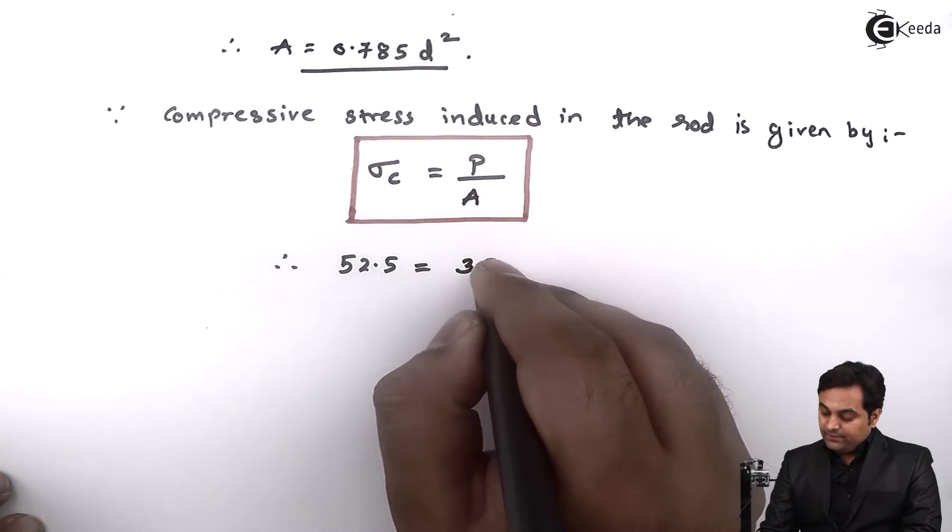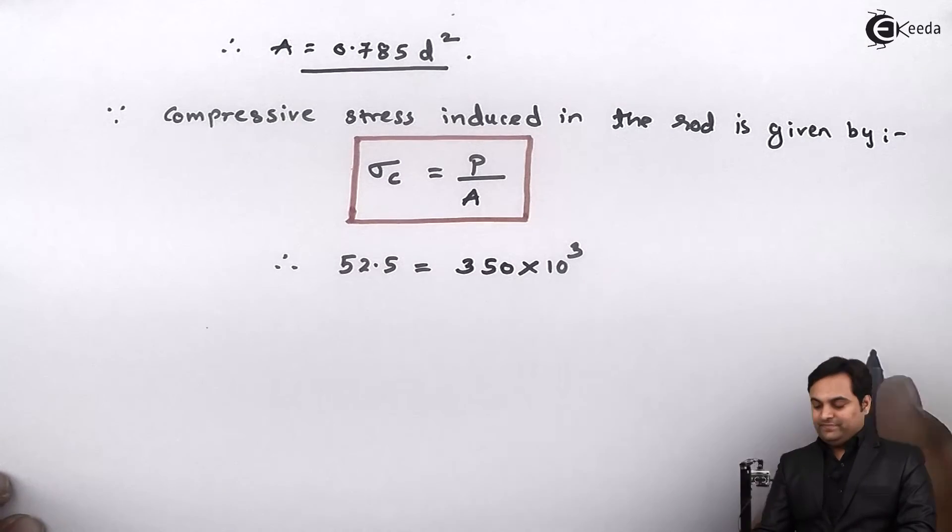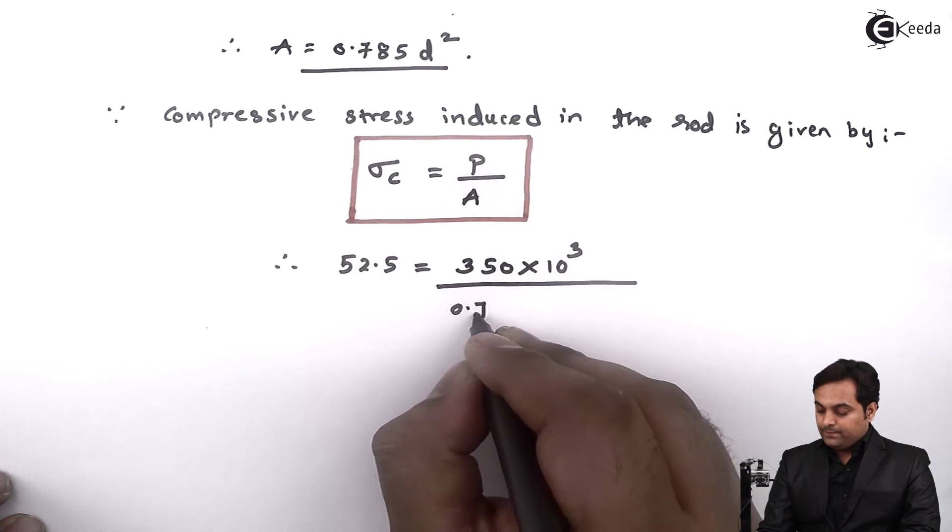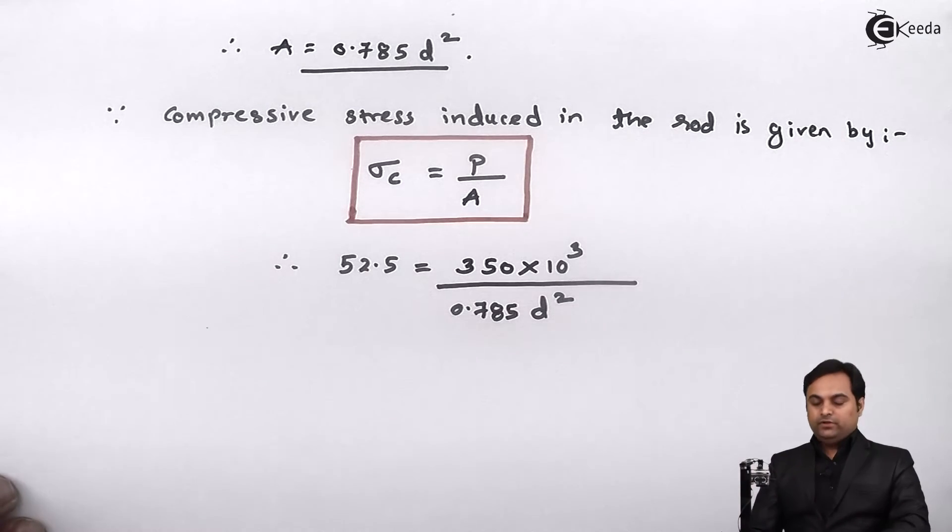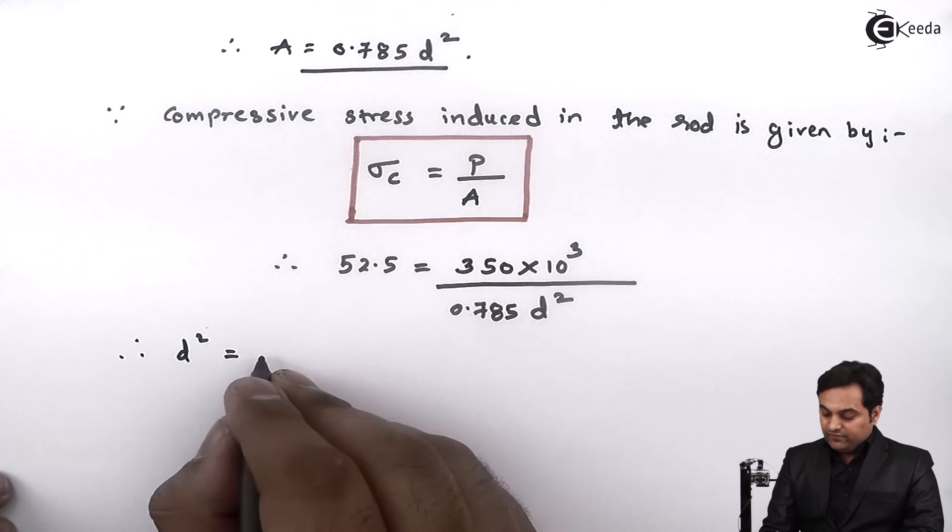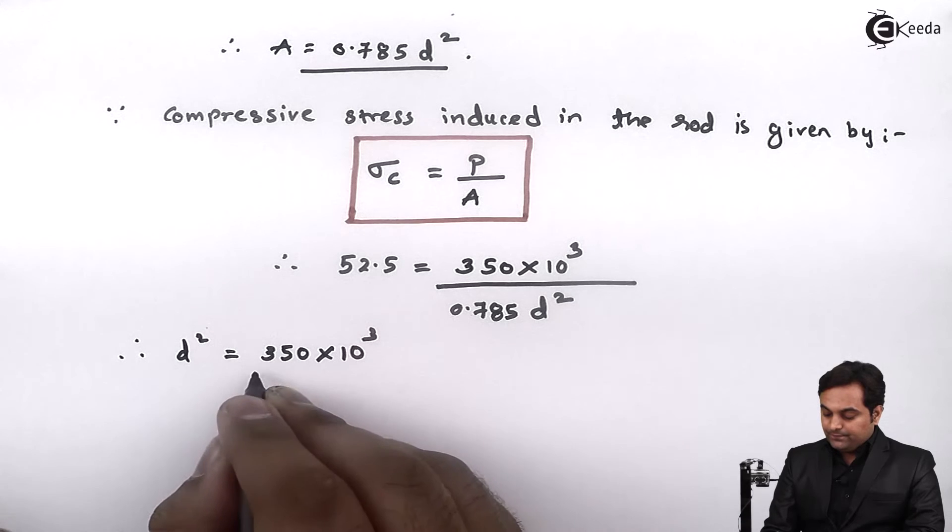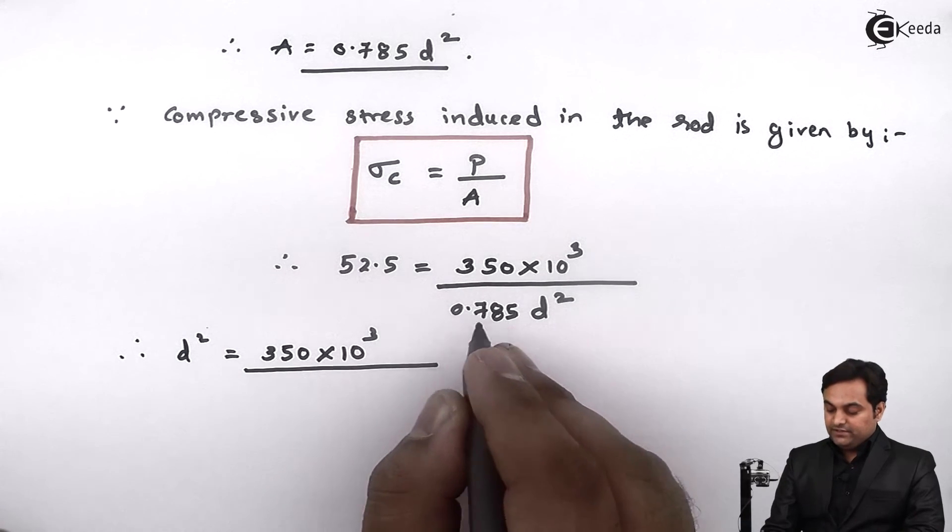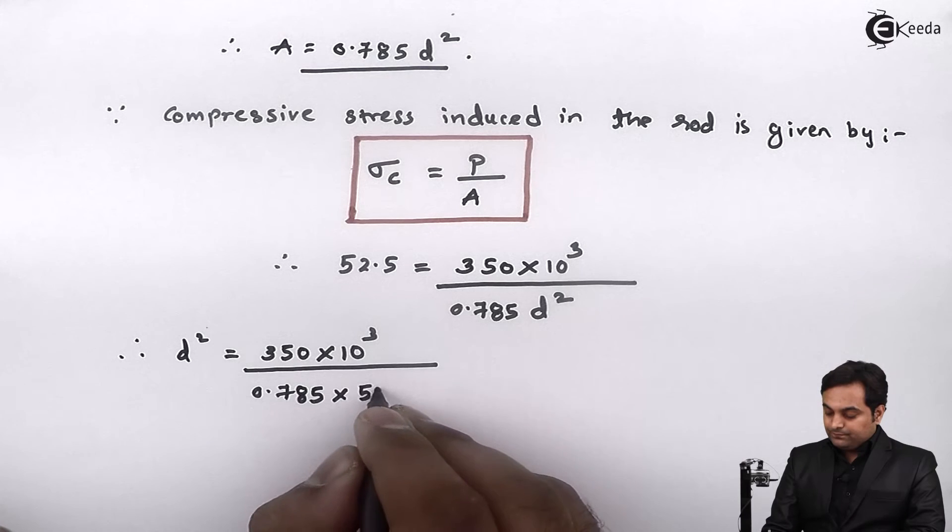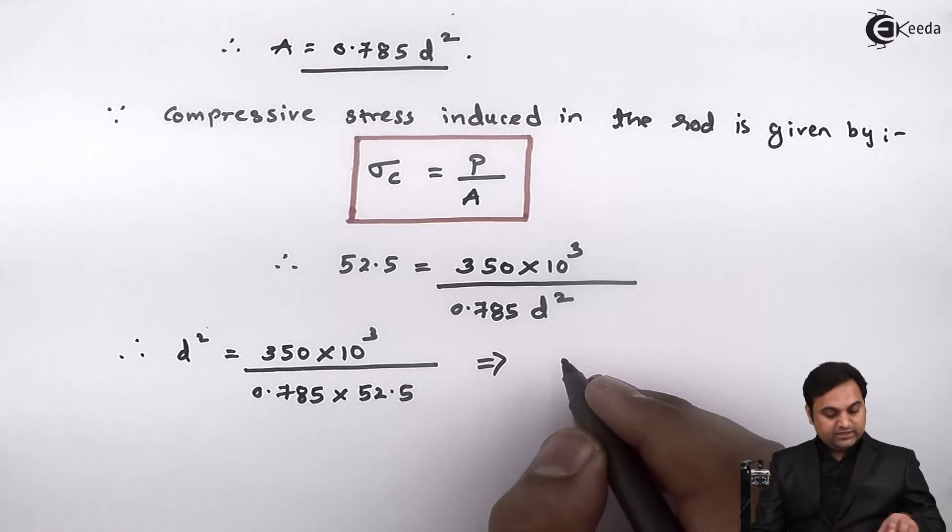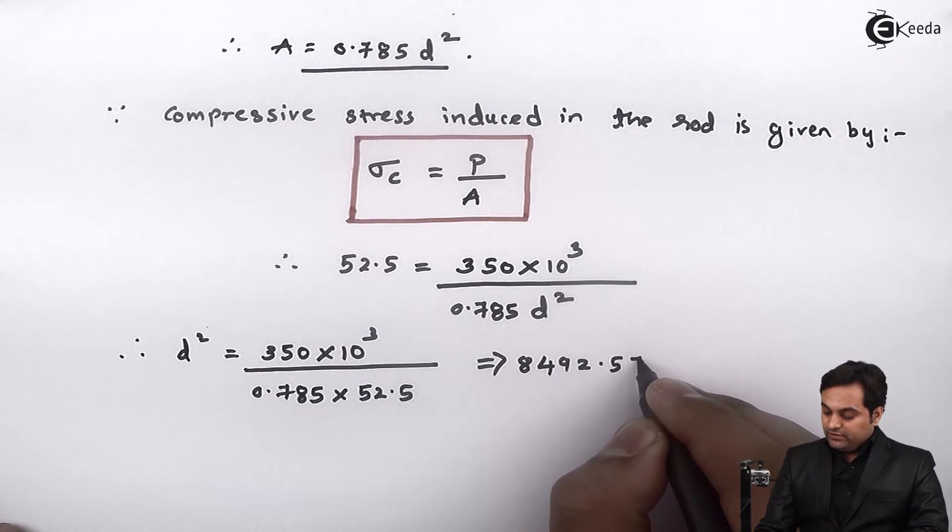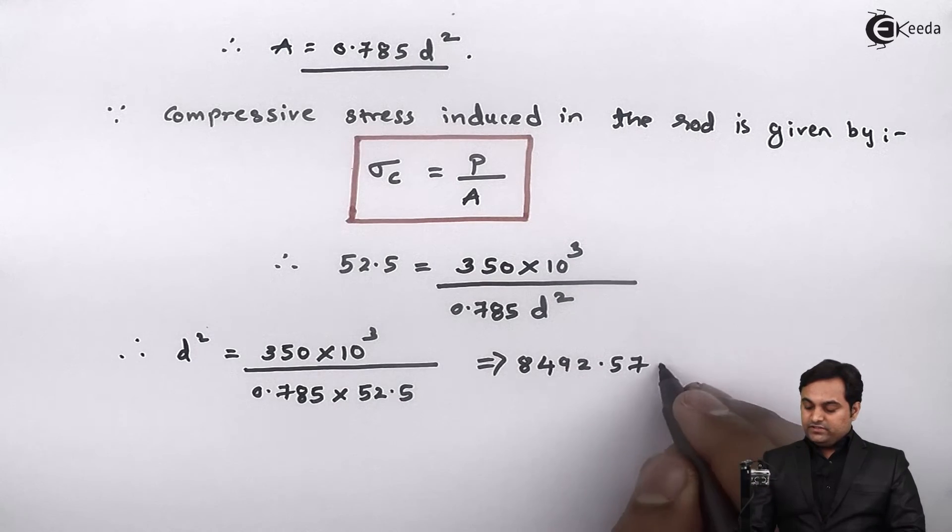area it is 0.785 d square. So therefore I'll shift d square on one side, so here we have 350 into 10 raise to 3 divided by here we have 0.785, 52.5 will go into the denominator. So from this I'll get d square answer, it comes out to be 8492.57. Now this is the answer of d square